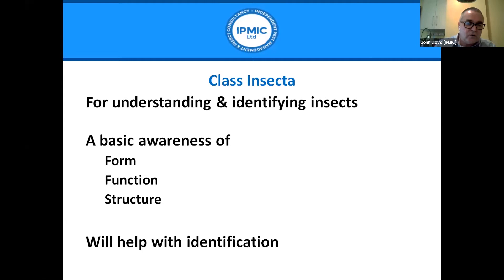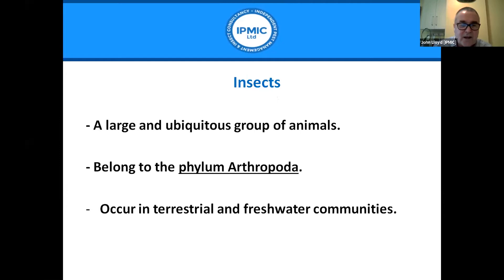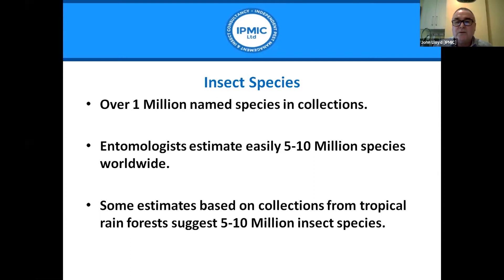To understand and identify insects it's necessary to have a basic awareness of their form, function, and structure. Even a basic understanding will go a long way in helping with identification. Insects are a large, ubiquitous group of animals belonging to Arthropoda. They inhabit terrestrial and freshwater communities. There are over a million named species, and estimates suggest five to ten million species worldwide, with numbers possibly higher based on rainforest sampling.